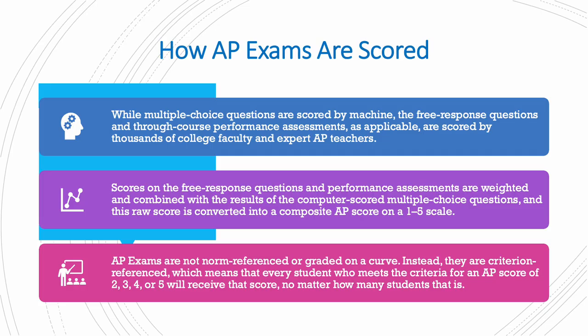How are AP exams scored? While the MCQ questions are scored by machine, the free response questions are scored by thousands of college faculty and expert AP teachers. Scores on the free response questions are weighted and combined with the results of the computer-scored MCQs, and this raw score is converted into a composite AP score on a 1 to 5 scale. AP exams are not norm-referenced or graded on a curve; instead, they are criterion-referenced, meaning every student who meets the criteria for an AP score of 2, 3, 4, or 5 will receive that score no matter how many students that is.